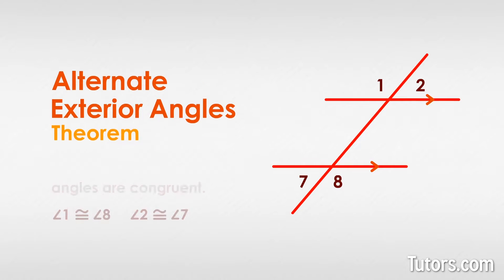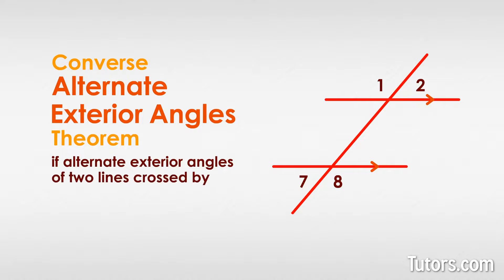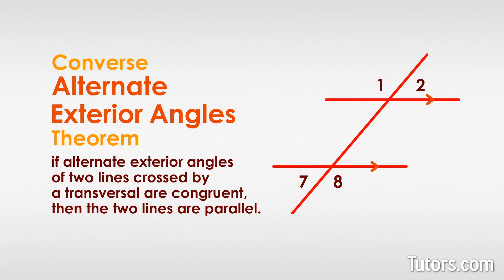Next, let's talk about the converse of the Alternate Exterior Angles Theorem, which is also true. The converse states that if alternate exterior angles of two lines crossed by a transversal are congruent, then the two lines are parallel.